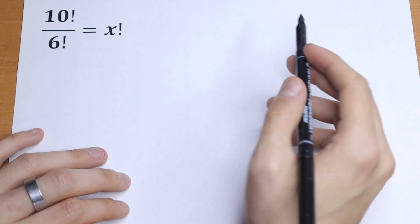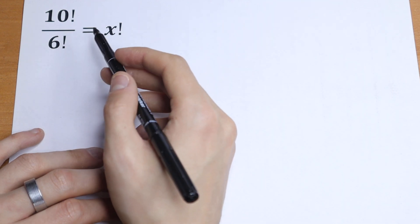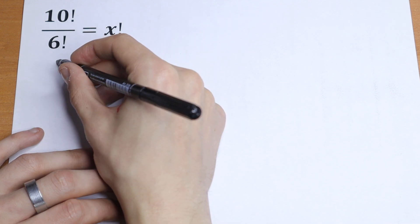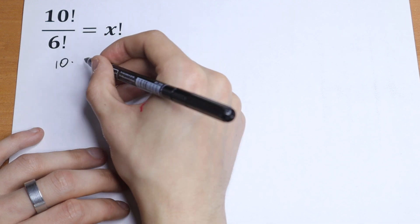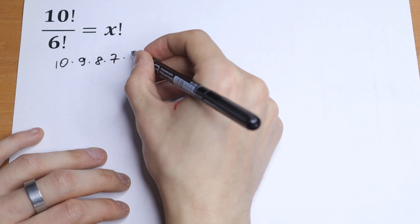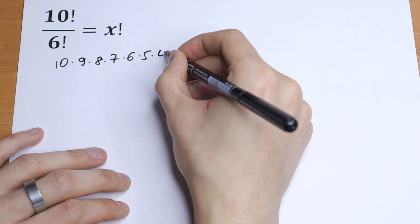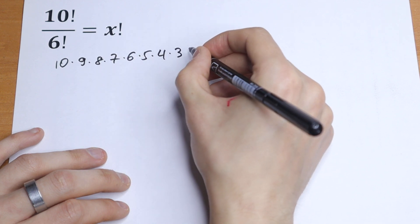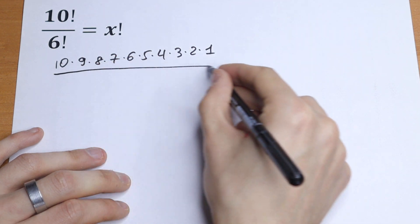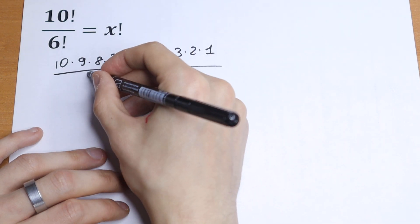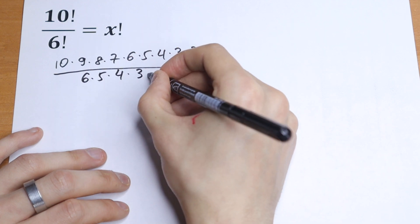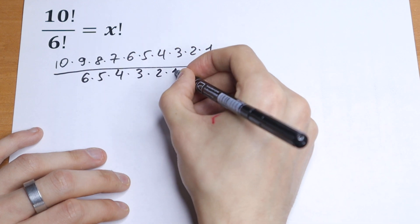Okay, how can we solve this? Of course we can simplify the left side, because we know 10 factorial equals 10 times 9 times 8 times 7 times 6 times 5 times 4 times 3 times 2 times 1, and 6 factorial equals 6 times 5 times 4 times 3 times 2 times 1.